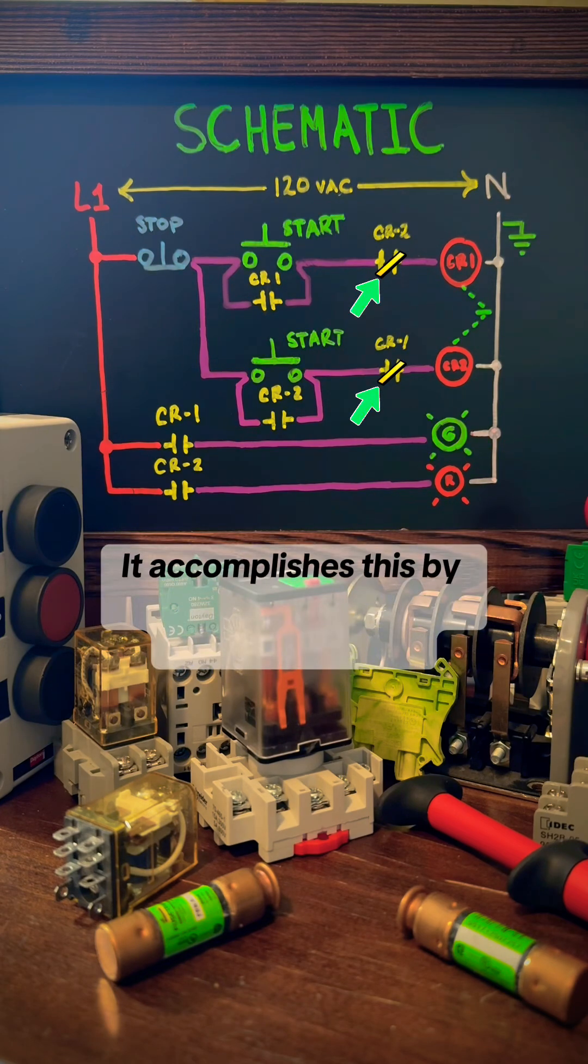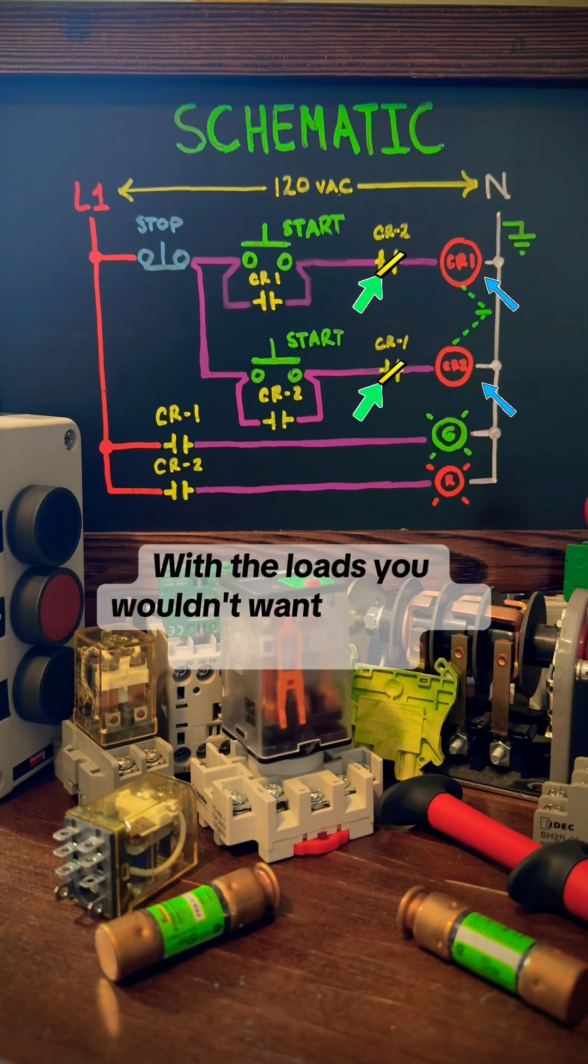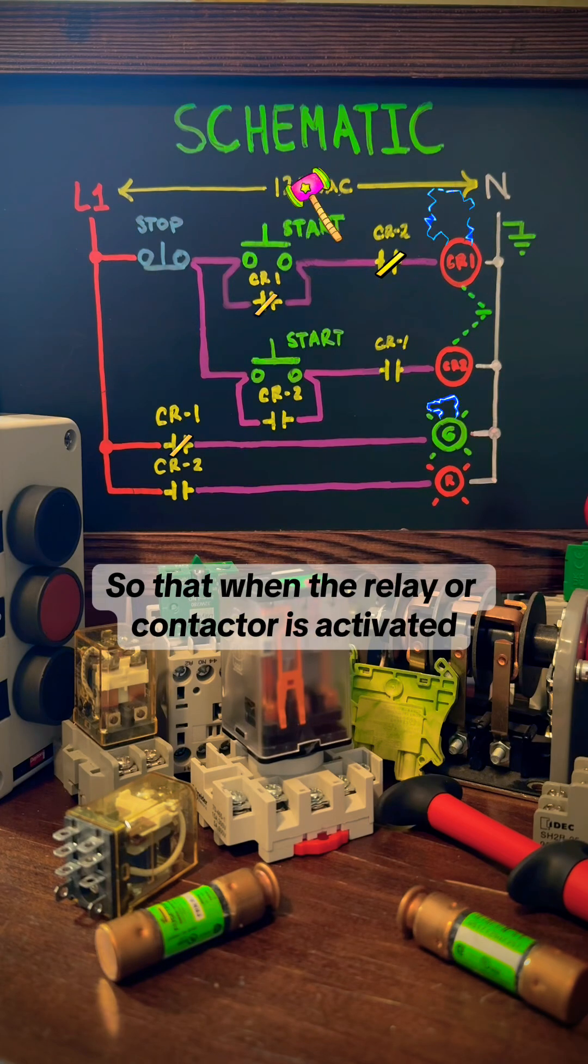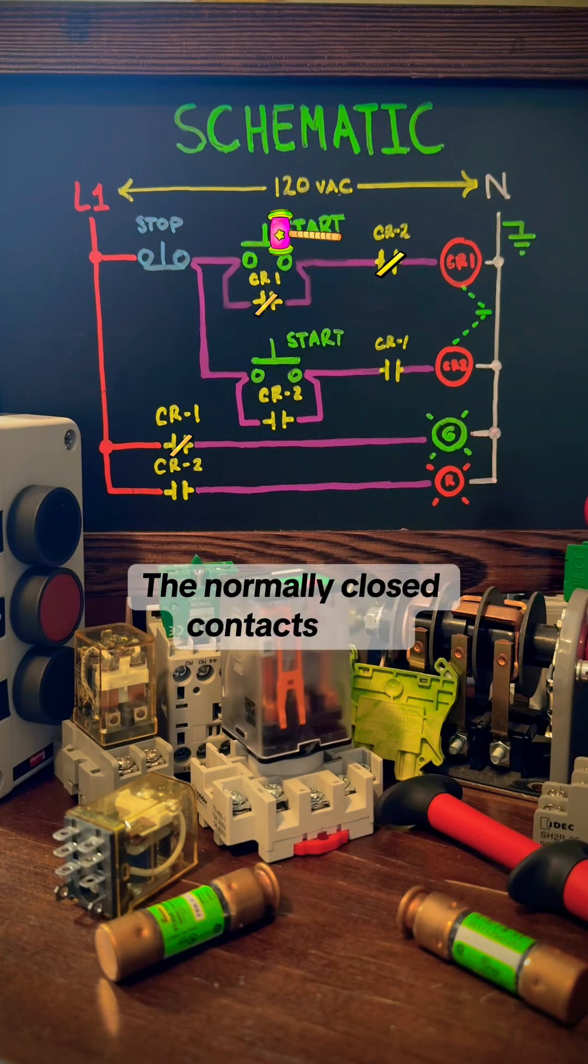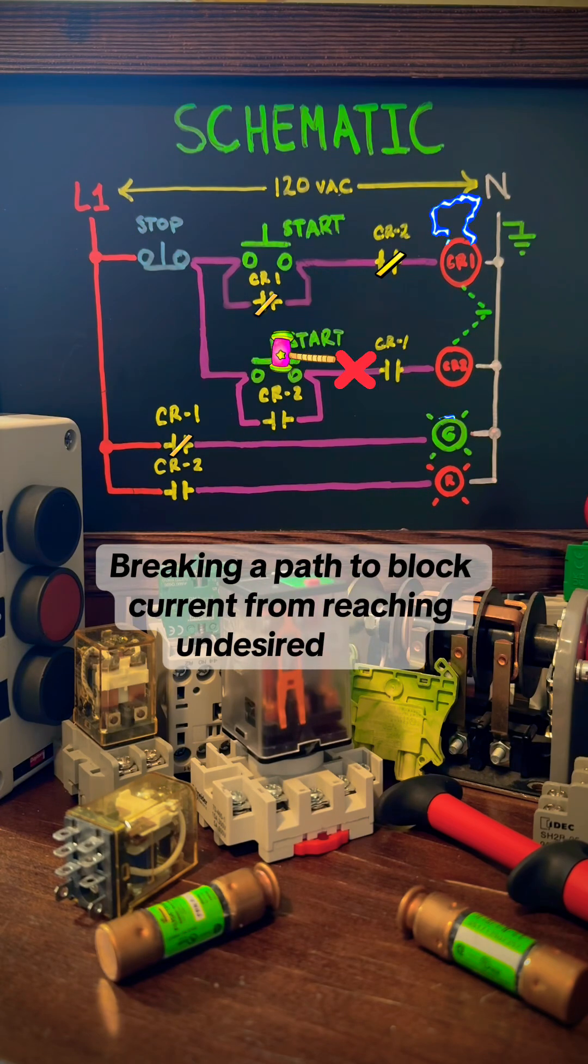It accomplishes this by placing normally closed contacts in series with the loads you wouldn't want activated simultaneously, so that when the relay or contactor is activated, the normally closed contacts open, breaking a path to block current from reaching undesired loads.